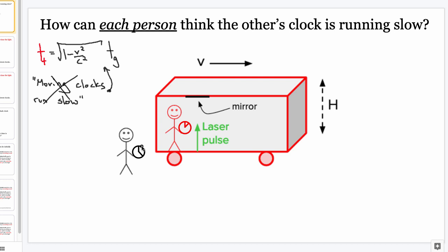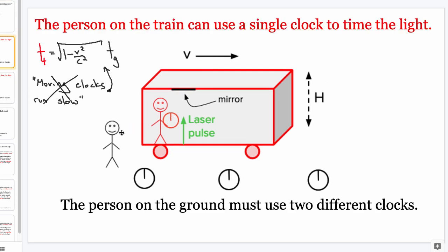Here's the map of what we'll show: how is it possible that red measures black clocks to run slow, and at the same time black measures red clocks to also run slow? Now, if we take the black perspective — observing from the ground, seeing the person on the train moving to the right — there is a difference here. The person in the red reference frame only needs one clock to measure this process. With a light clock, the light goes up to the ceiling and comes back down. Red is rolling right along with it and only needs one clock.